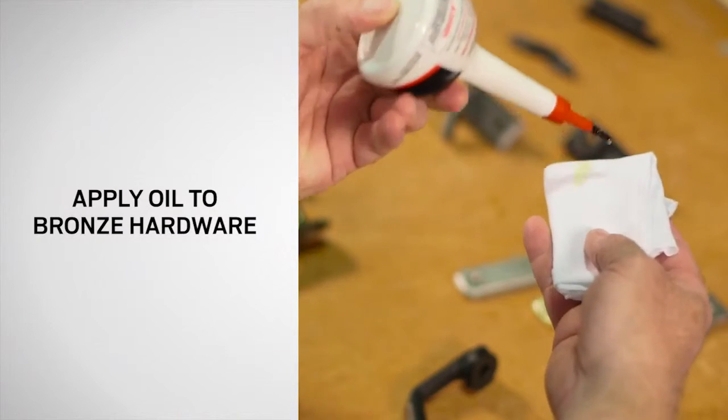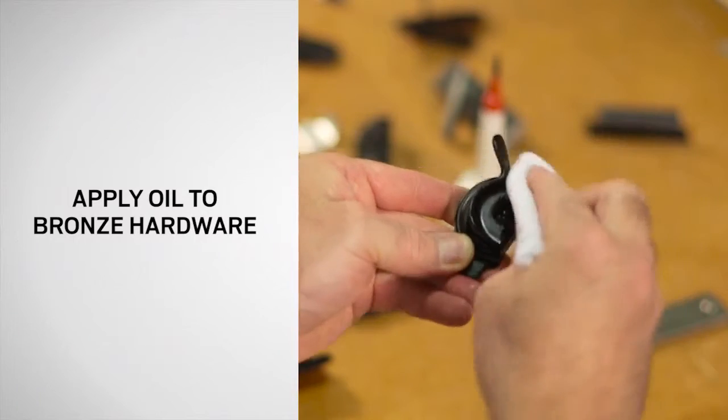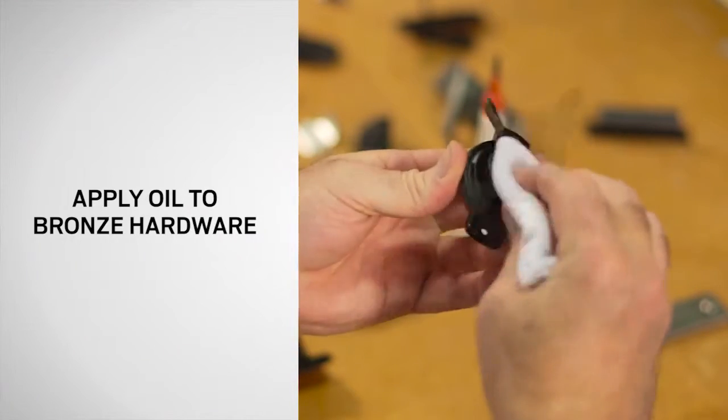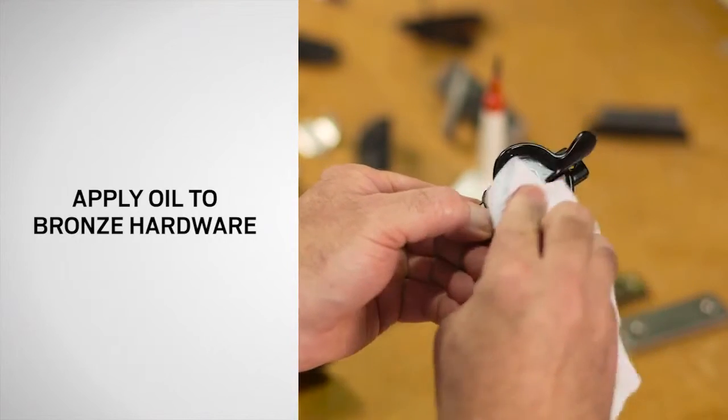Applying light mechanics oil to oil rub bronze and distress bronze hardware finishes can deepen the color and sheen. After a few minutes, gently wipe off the excess oil using a clean cloth.